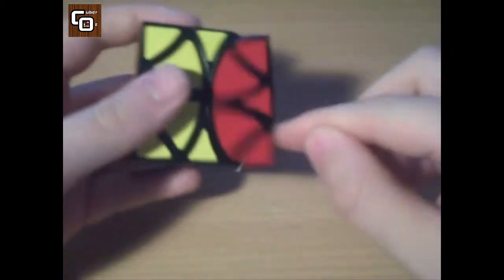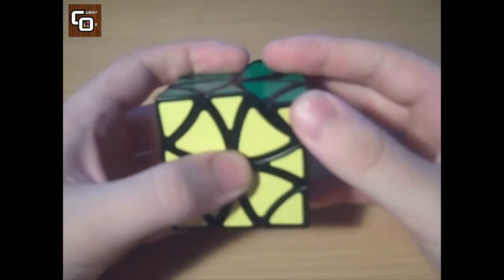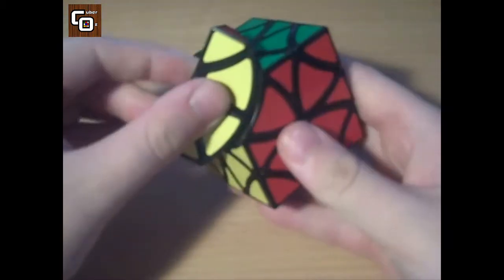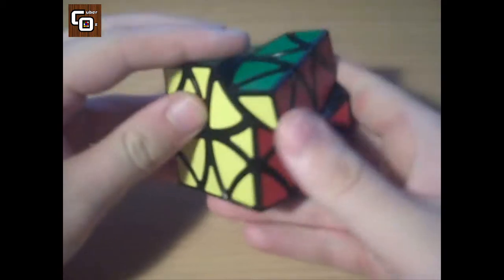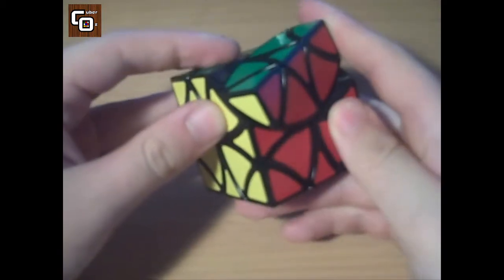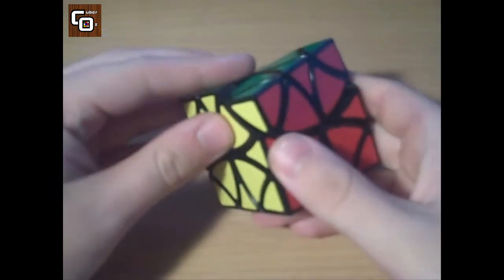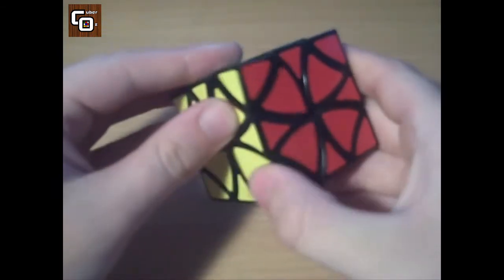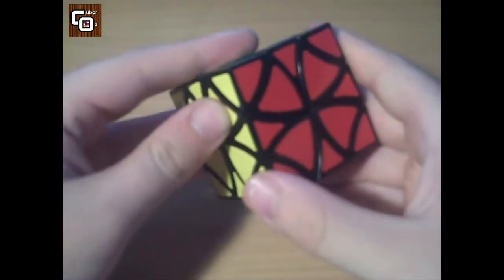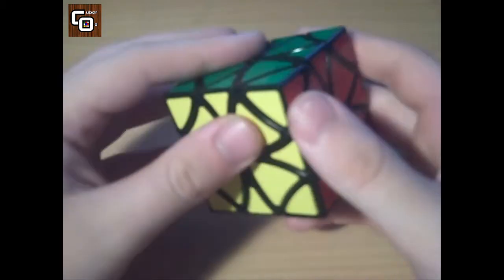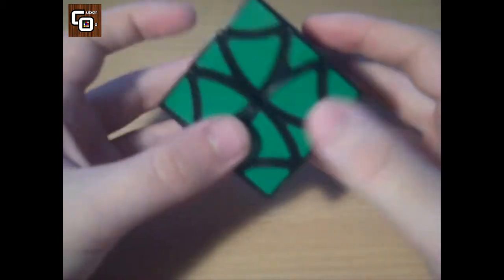As you can see, this can turn with just one finger. It does have a bit of corner cutting. As you can see there, I think this is probably the best way to show you. That's a bit over the limit. But there, it can cut that. And no over cutting whatsoever. But I wouldn't expect it on a cube like this anyway.